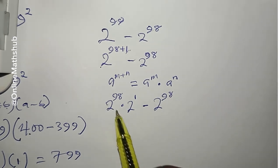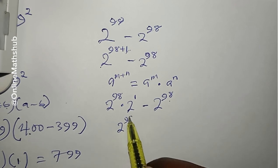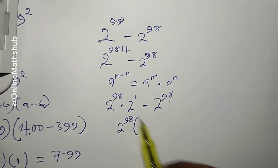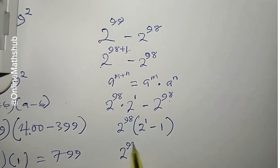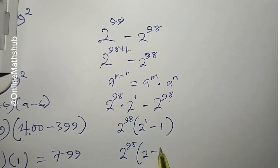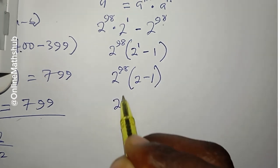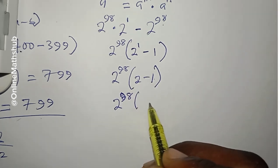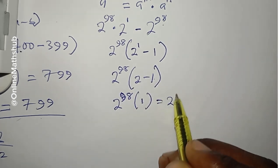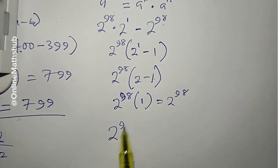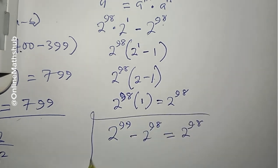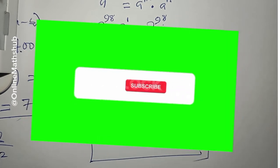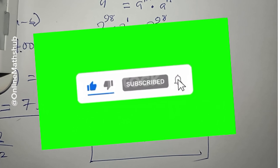The next step is to factorize the common term. You can see that 2 to the power 98 is common. Factorizing it out leaves 2 to the power 1 in the first part and 1 in the second, so we get 2 to the power 98 times (2 minus 1). Since 2 minus 1 equals 1, this is simply equal to 2 to the power 98. So 2 to the power 99 minus 2 to the power 98 equals 2 to the power 98. If you got some value from this video, don't forget to subscribe and turn on the notification icon. See you in the next video!